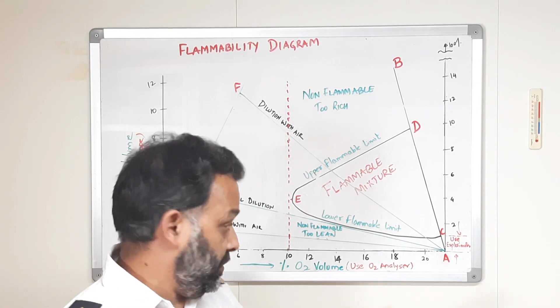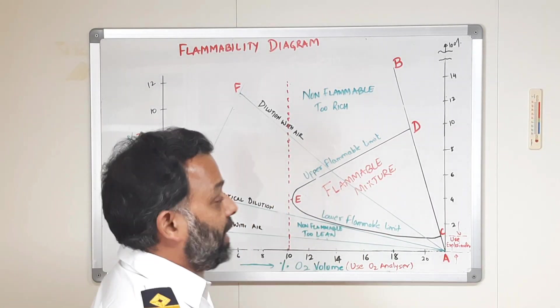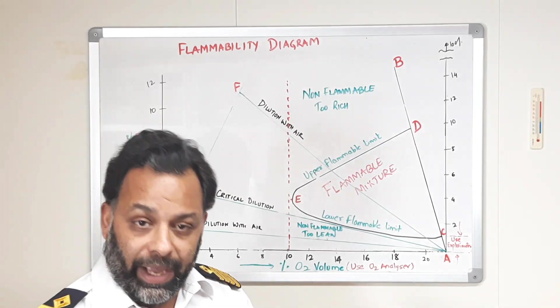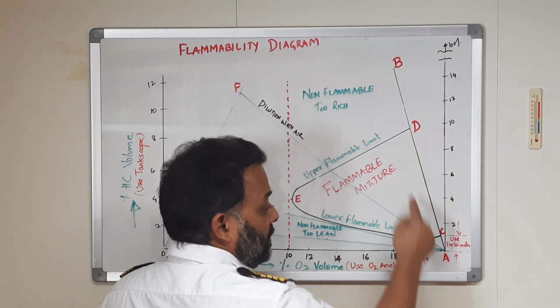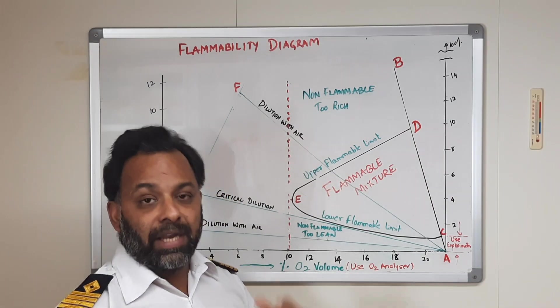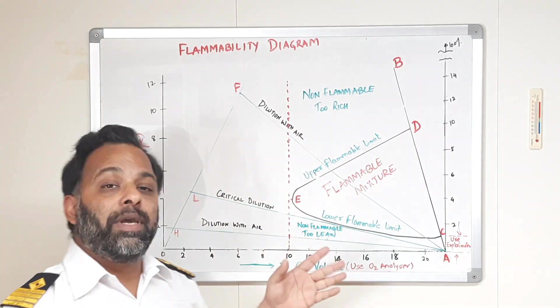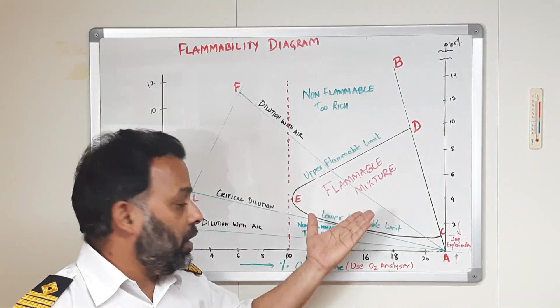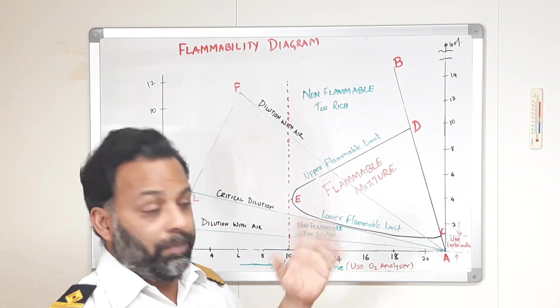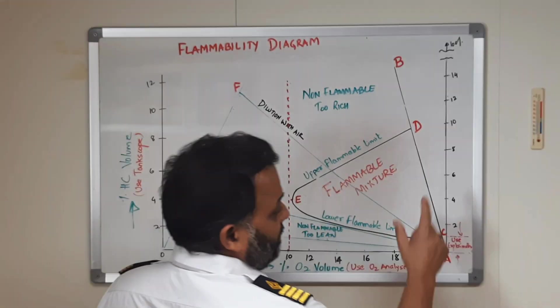The point remains that if the mixture of air and hydrocarbon is within this range from C to D, then we have a mixture which can be fired, through which a fire can take place.